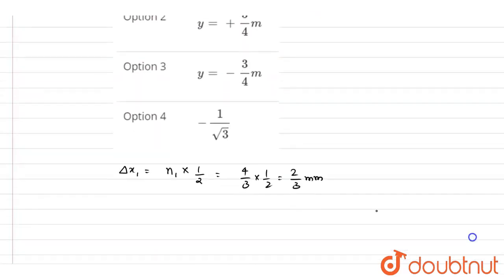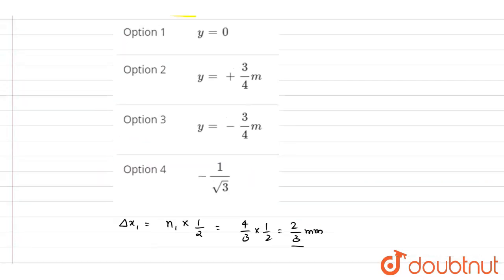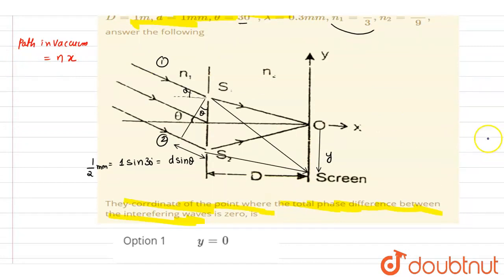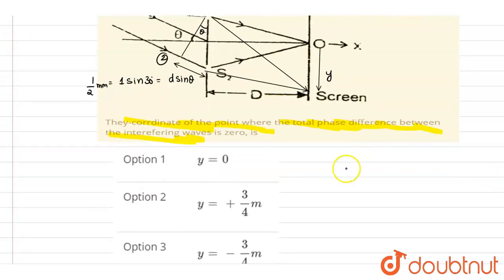Now we want the path difference to be this much. But this time, the path difference will be more for the light one. So now if I write down the path difference, it will be equals to y by capital D times small d.